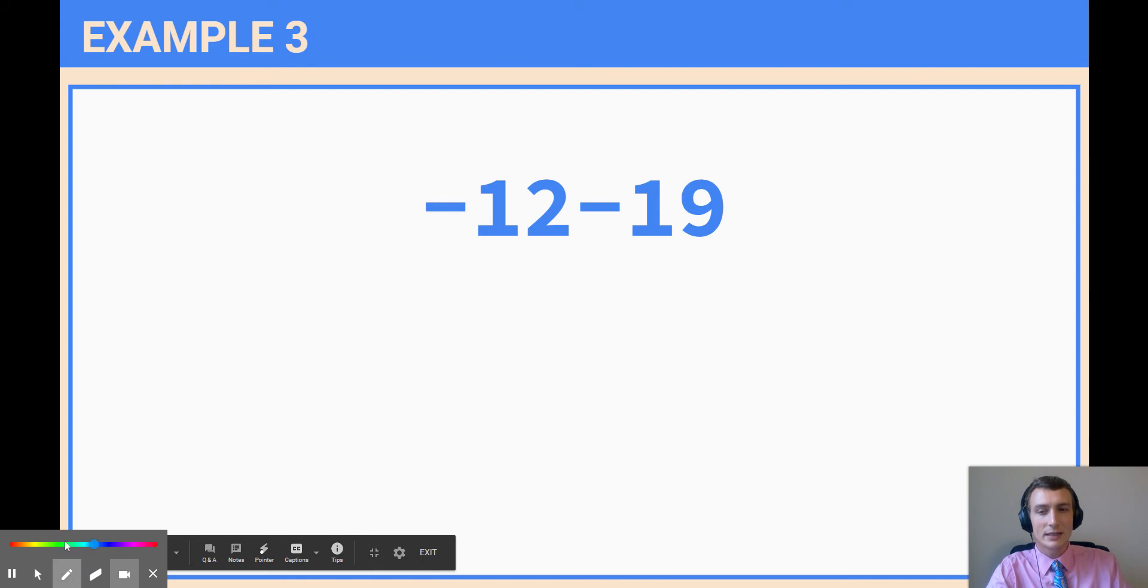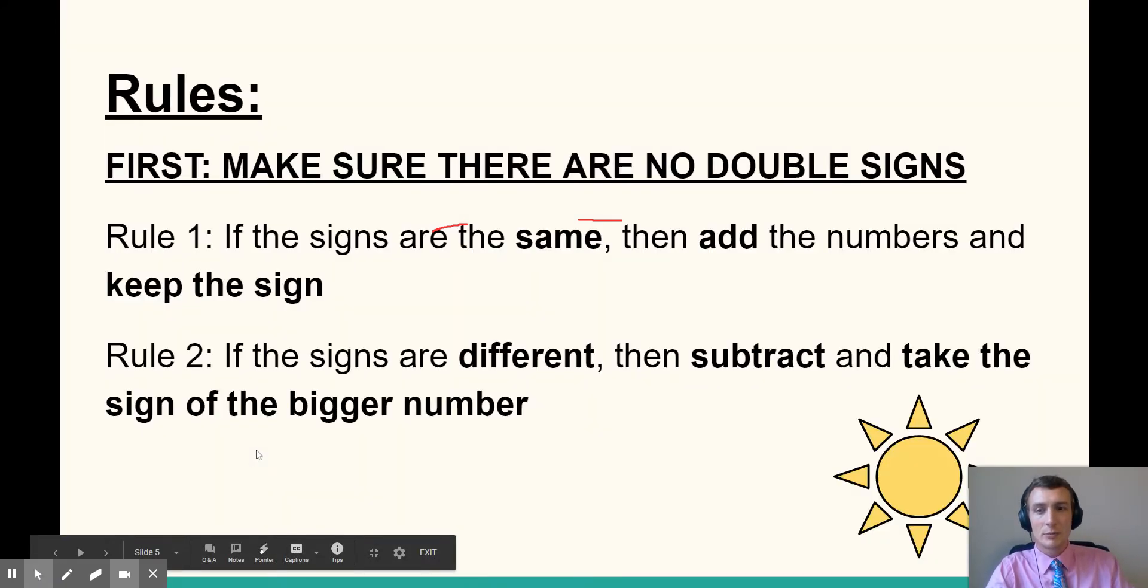let's take a quick look and we can tell right away: negative, negative. That means we have the same signs. And since that is the case, we're going to use our rule for the same signs, which is Rule 1.